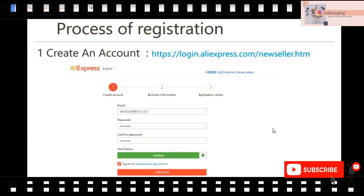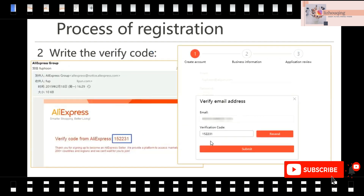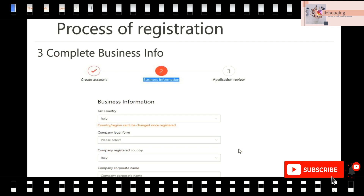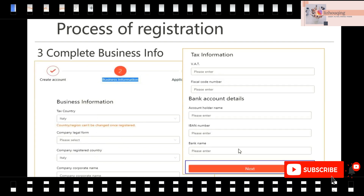Then we go to the process of registration. First, you need to create an account — you just need an email address and log into this website. Use the password, then click continue and you can have an account. The second step is to write the verify code. Your email address should be one you use often, because you need it to receive the verify code. Take your email, get the verify code, write it in, then submit. After submitting, you should complete your business info, including your company info, tax information, and bank account details. Just follow the steps to fill in the form.